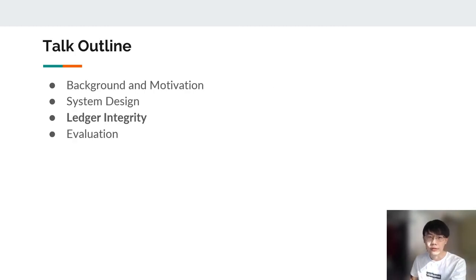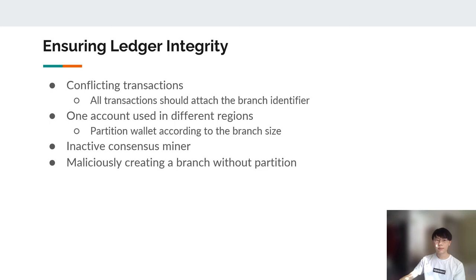In the next section, we are going to discuss some new threats introduced by the split and merge design. The first threat is conflicting transactions. Transactions are selected from a mining pool to be included in the new block. Since the mining pool is not cleared after partition, miners from different regions can still pick the same transactions and include it in different branches, which will result in the conflicting transactions. To solve this problem, we require all transactions to include the signature of first block in the branch as the identifier. So one transaction can only be included in one branch.